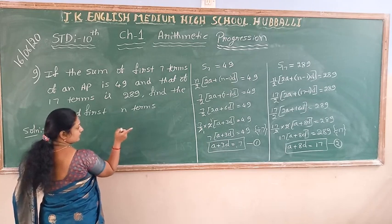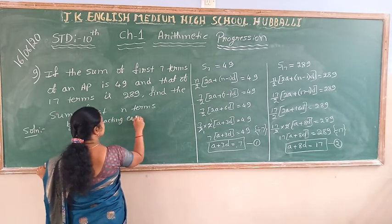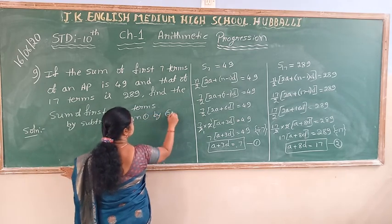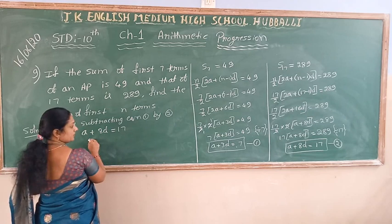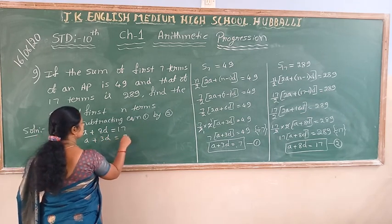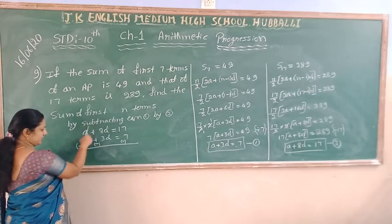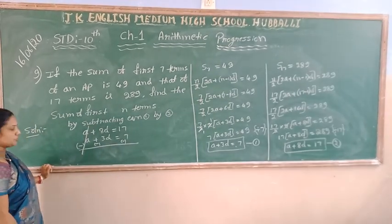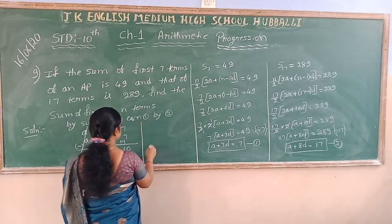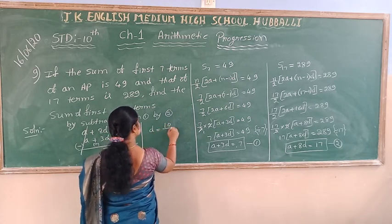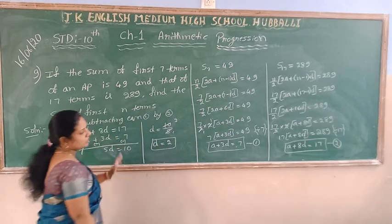By subtracting equation 1 from equation 2: writing equation 2 first, A plus 8D is equal to 17, then A plus 3D is equal to 7 below it. Subtracting and changing signs, A minus A cancels, and 8D minus 3D is 5D is equal to 10. So D value becomes 10 by 5, giving D is equal to 2.